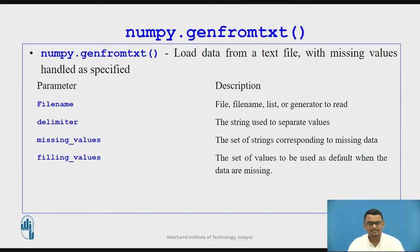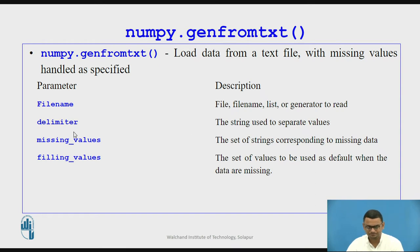Next we have genfromtxt, which loads data from a text file with missing values handled as specified. The parameters include: filename — the file or dataset to read; delimiter — the string used to separate values, which may be a space, comma, or semicolon; missing_values — the set of strings corresponding to missing data; and filling_values — a set of values to be used as defaults when data is missing. We shall see examples of all these parameters in the upcoming slides.